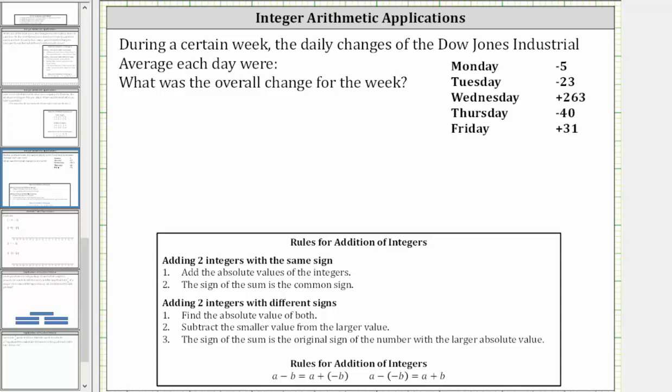During a certain week, the daily changes of the Dow Jones Industrial Average each day were a loss of five, a loss of 23, a gain of 263, a loss of 40, and a gain of 31. What was the overall change for the week?